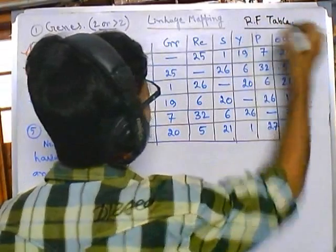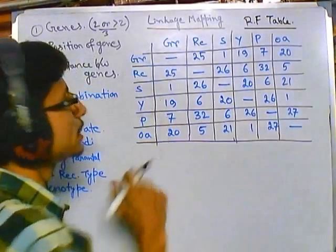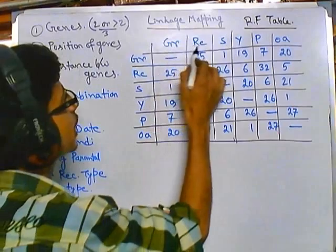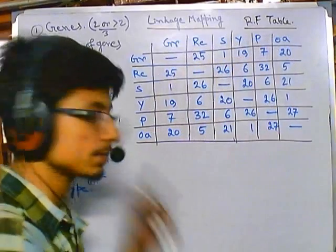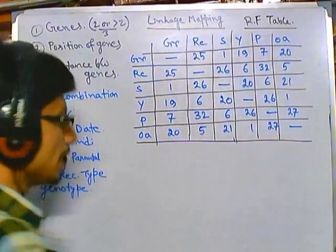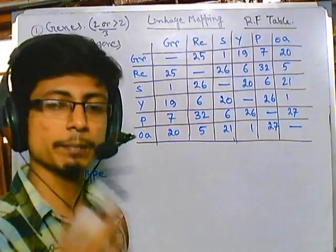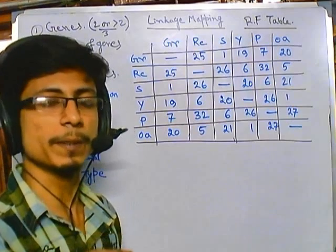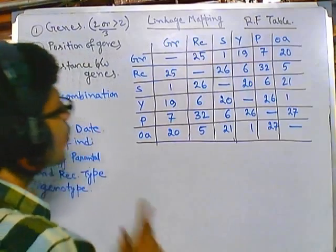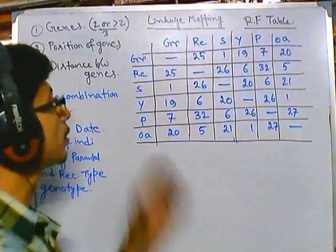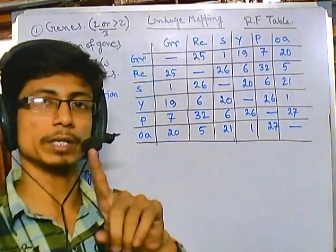For Bombyx mori, what they have asked us is: what are the positions of these genes — GR, RC, S, Y, P, and OA? How can we find out? There are simple approaches, and I am going to tell the step-by-step approach. I am telling you this is really easy.